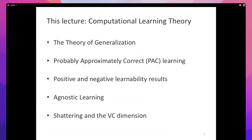Just to step back and see where we are: we looked at probably approximately correct learning, derived an Occam's Razor result for finite hypothesis spaces containing the true concept, and looked at some positive and negative learnability results. Then we gave up the requirement that the hypothesis space contains the true concept, which takes us to agnostic learning. We derived an Occam's Razor result there also, and they kind of look the same. The next thing we're going to do is give up the assumption that our hypothesis space is finite, and we'll derive another result.